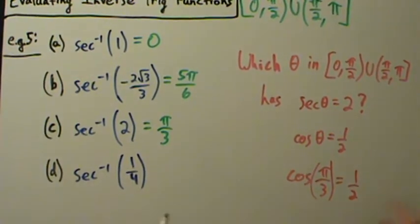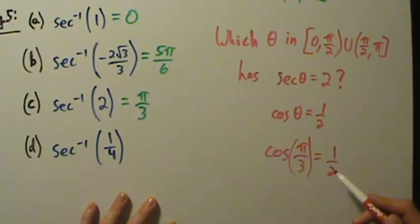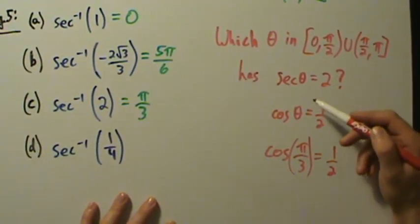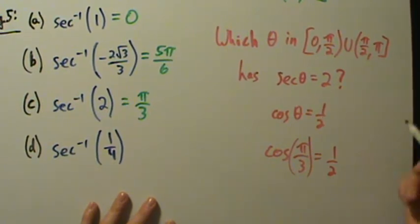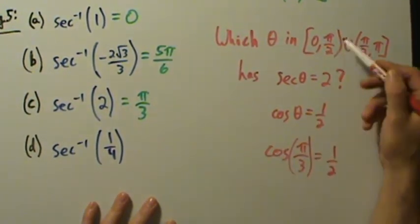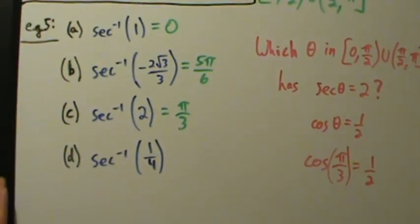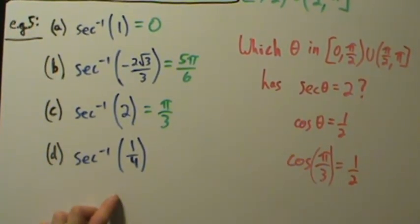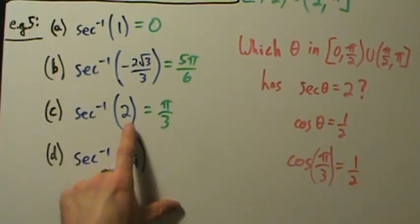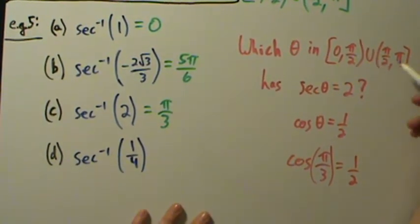So the answer to part C is π/3. Cosine of π/3 is 1/2, which means secant of π/3 is 2, and π/3 is inside the interval. There are actually infinitely many numbers whose secant is 2, but there's only one such number inside this interval, and that number is π/3.